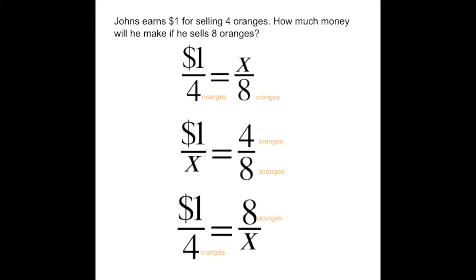Notice I set up the proportion three different ways. All I'm doing is taking the information they give me and putting it into the proportion. Notice we have the one dollar over the four oranges is equal to x, which is what we're trying to solve for.